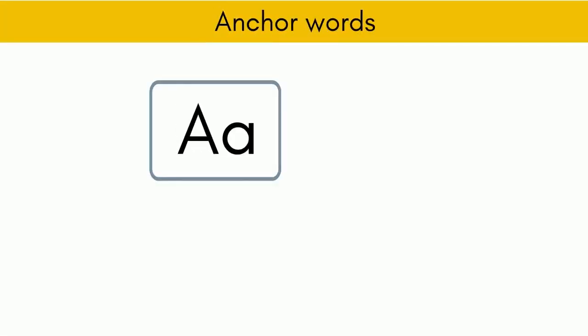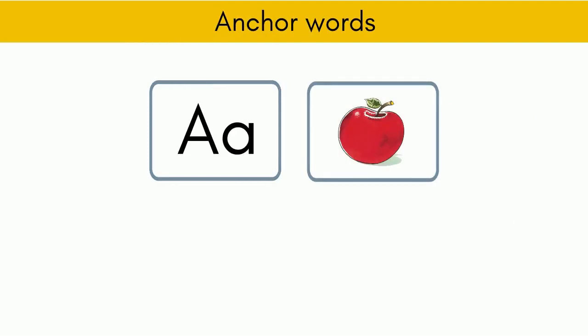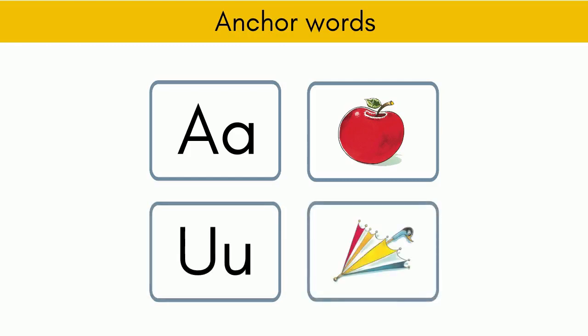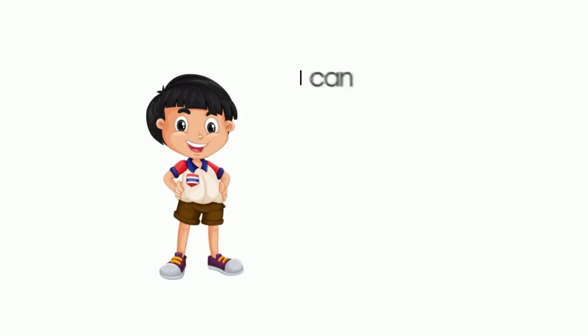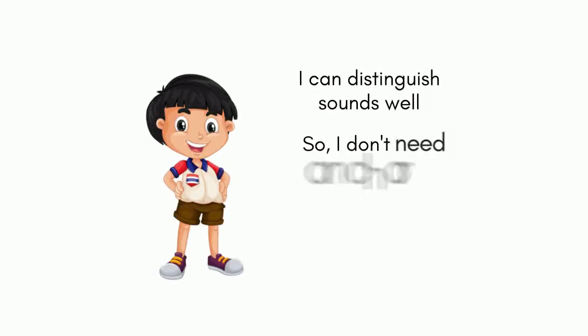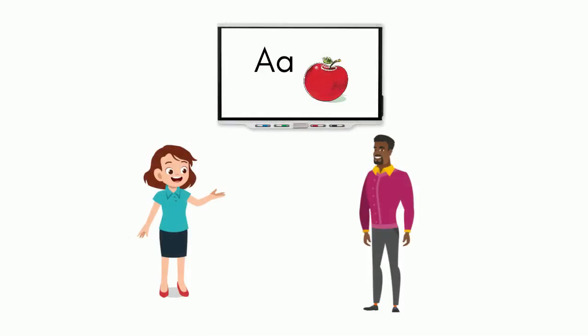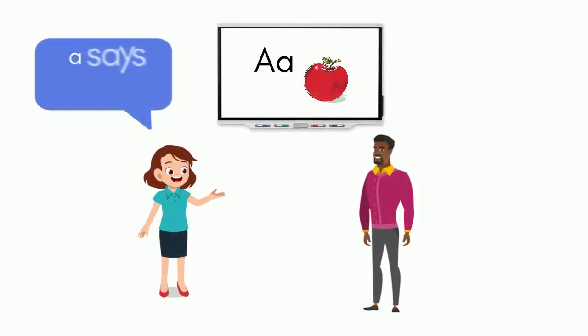I suggest that rather than calling this A, both you and the children can call it A-apple and call this A-umbrella. We can use cards with the letter on one side and the anchor word on the other side. We continue to call letters A-apple or A-elephant until the children can easily distinguish the sounds. Notice that I just said A-apple.